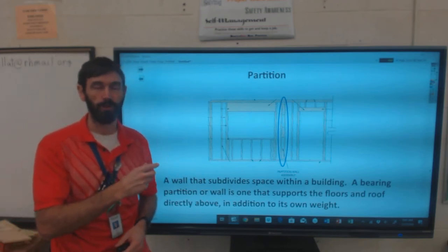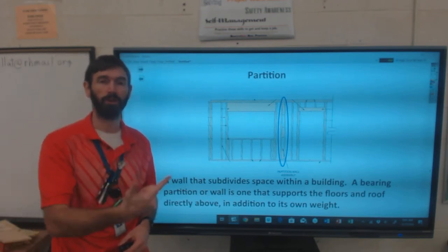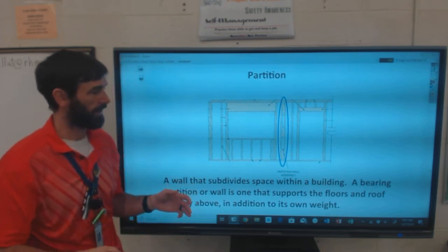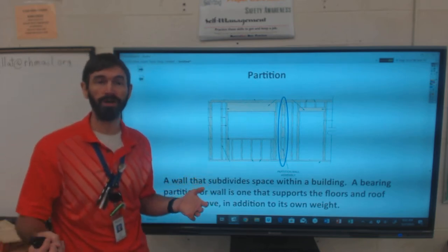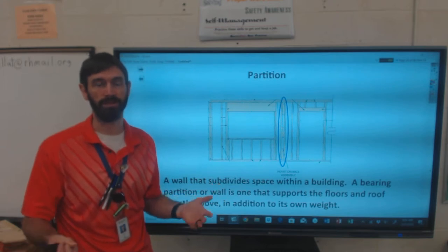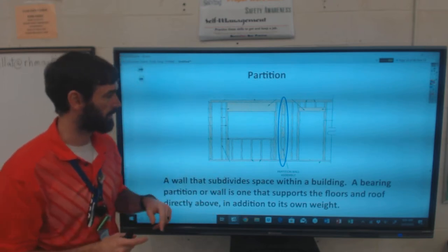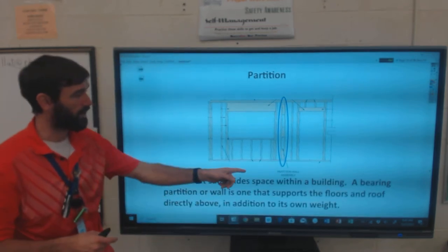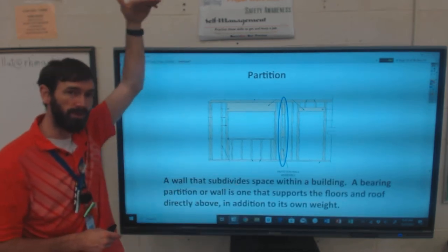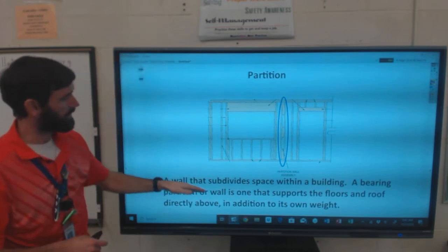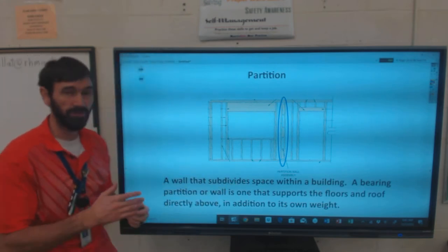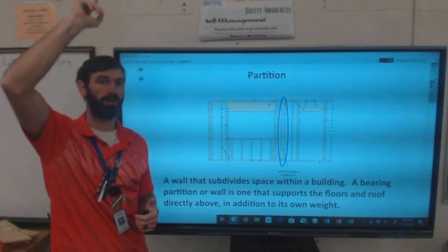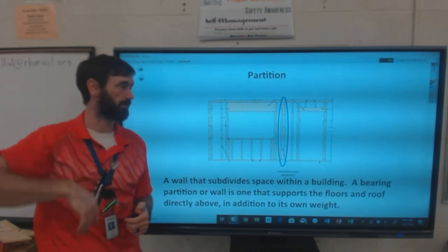There's two types of partitions: non-load bearing and load bearing. A non-load bearing doesn't support any weight. However, a bearing partition or wall is one that supports the floors and roof above it in addition to its own weight. So it doesn't just separate the rooms, it helps support ceiling joists or rafters or floor joists above it.